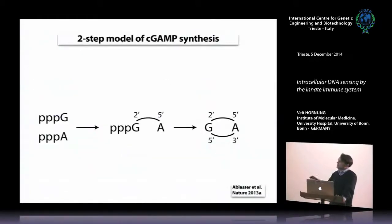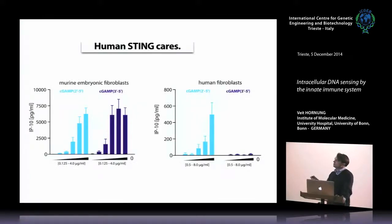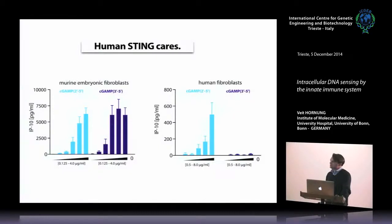You might wonder why this matters. It matters because human cells do not properly respond to the 3'-5' cGAMP molecule — at least the most common STING variant — but they do respond to the 2'-5' cGAMP. Mouse cells respond to both. So this is a biologically important difference. And therapeutically, if you want to develop this molecule in a therapeutic approach, you should go for the 2'-5' linked molecule, not the 3'-5' linked one.